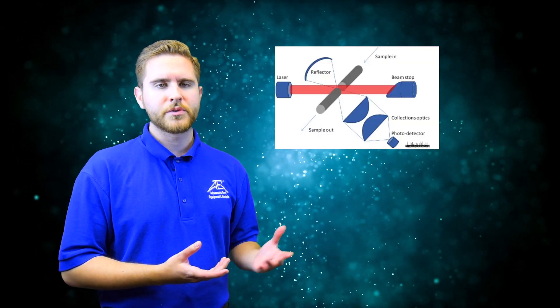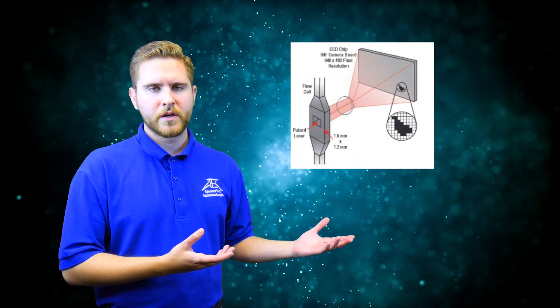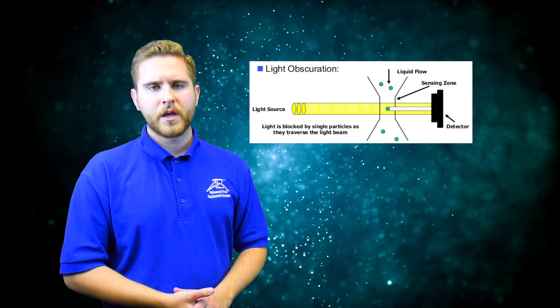An air particle counter diagnoses indoor air quality by counting and sizing air particles in controlled spaces. Particle counting is performed with the principles of light scattering, direct imaging, or light obscuration. The particle sample is passed through a detection chamber, and as it passes, a high intensity light source illuminates the particle with one of these three methods.